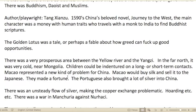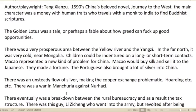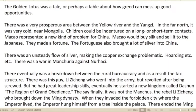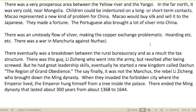At that time there were 15 districts in China using a hierarchical system of government, with a mix of religious faiths: Buddhism, Taoism, and Islam. Author and playwright Wu Chengen in the 1590s wrote China's beloved novel 'Journey to the West.' The main character was a monkey with human traits who travels with a monk to India to find Buddhist scriptures.